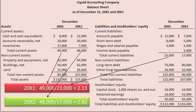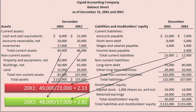The 20x2 ratio is computed as total current assets of $48,000 divided by total current liabilities of $17,000, which equals 2.82. LAC's current ratio of 2.82 indicates that it has $2.82 of current assets to pay off every $1 of current liabilities coming due within the next year, whereas in the prior year it had only $2.13 of current assets for every $1 of current liabilities. Because LAC's current ratio has increased, it now appears to be more liquid.